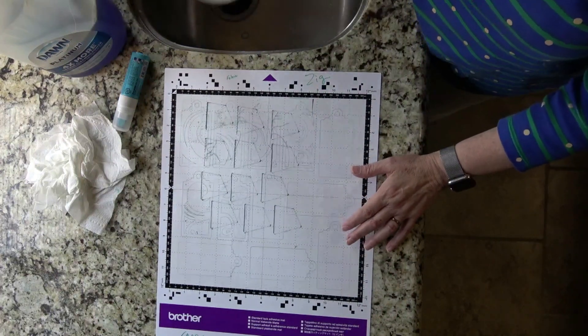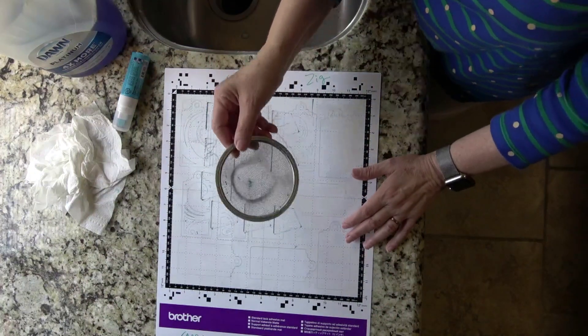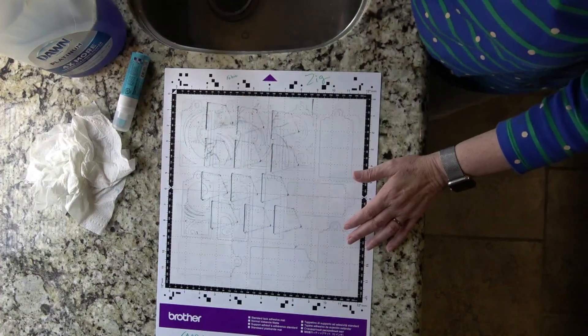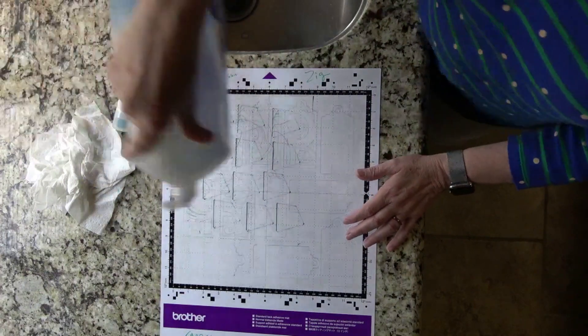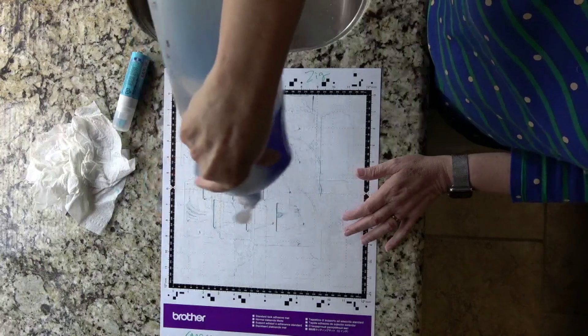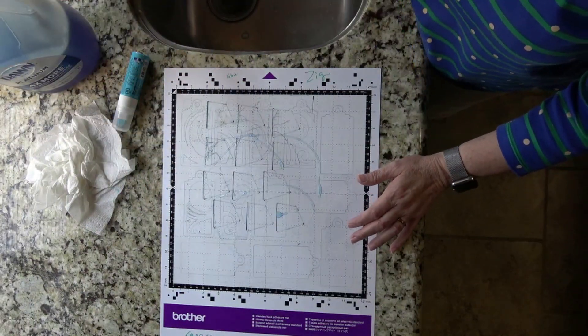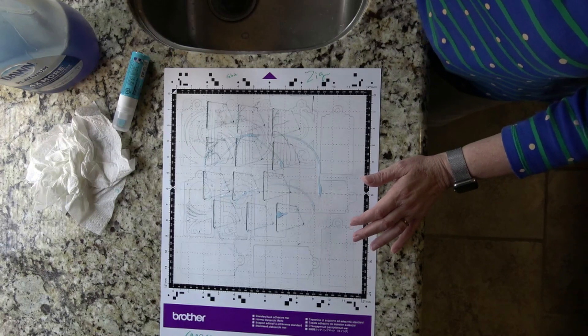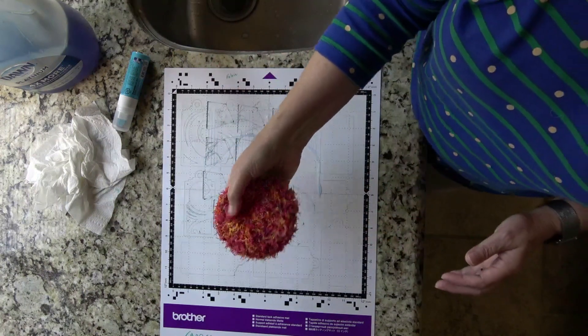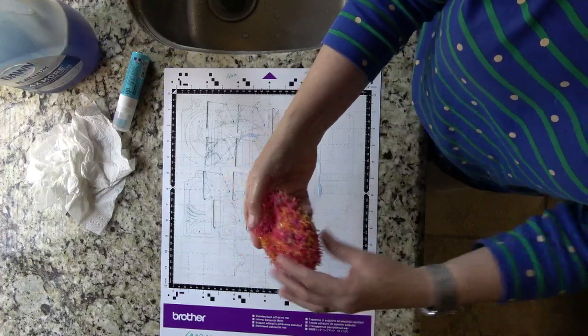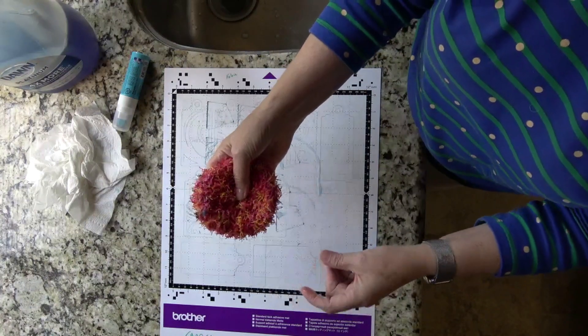And I put one of these little strainers in my sink so that the fibers don't go down the drain. I just put a little bit of Dawn on the mat. And I have a damp scrubby. And this is a scrubby that I made with some of that scrubby yarn. I have a video on how to make this. We did this in one of our classes.